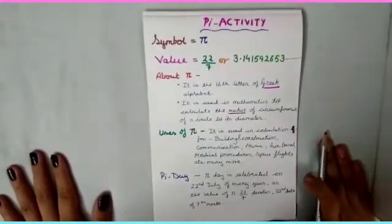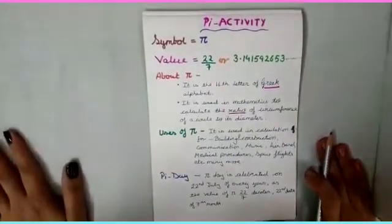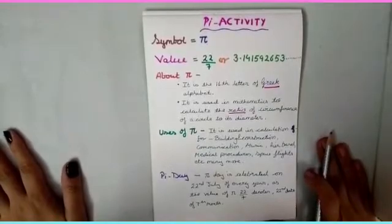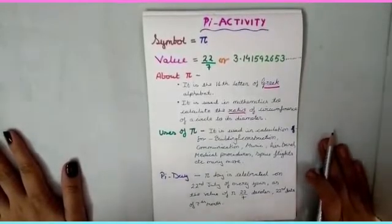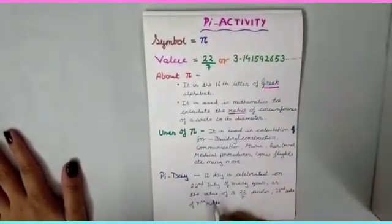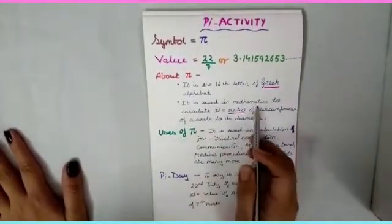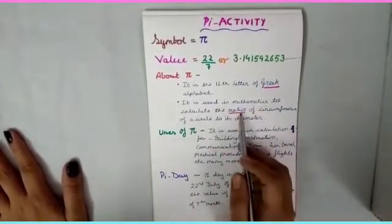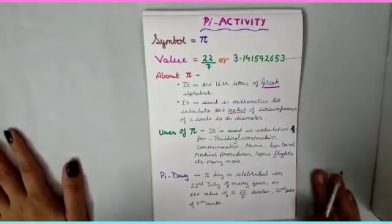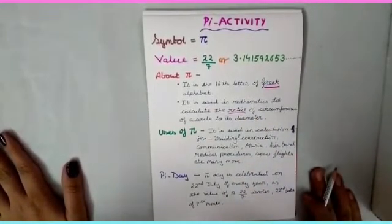Okay, now let's learn something about pi. What is it? First of all, pi is the 16th letter of the Greek alphabet. Then it is used in mathematics to calculate the ratio of circumference of a circle to its diameter.